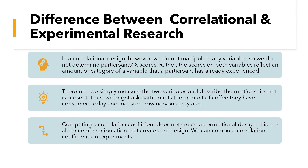Now, the difference in correlational design: most of the time we do not manipulate any variable in correlational research. We are not going for the manipulation of the independent variable. We do not determine each participant's condition. Rather, we score both variables, which reflect an amount or category that the participant has already experienced — how much coffee they already drink day to day. We just take both things simultaneously. In correlational research, we simply measure the two variables and describe the relationship between them.